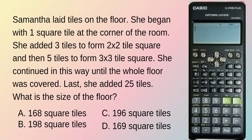Samantha laid tiles on the floor. She began with one square tile at the corner of the room. She added 3 tiles to form a 2x2 tile square, and then 5 tiles to form a 3x3 tile square. She continued in this way until the whole floor was covered. Last, she added 25 tiles.